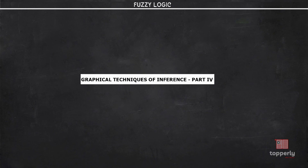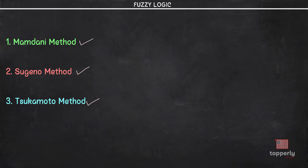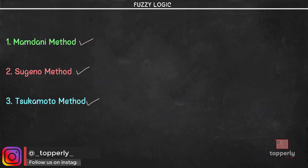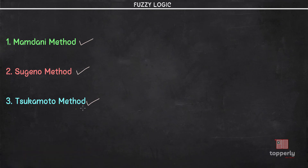Hey everyone, welcome back to FuzzyLogic lectures. In the last few videos, we covered the three different types of graphical techniques of inferences: the Mamdani method, Sugeno method, and the Tsukamoto method. In this lecture, we'll be doing a solved example that constitutes all three methods. So let's get started.